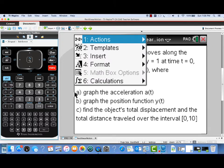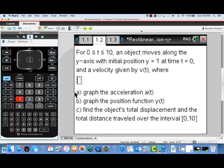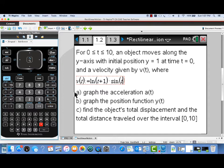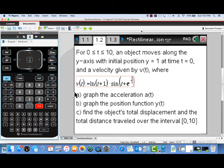Now, I've left that blank. I'm going to enter the velocity now in a math box so it will be an active definition. We'll just type in v of t, and instead of using the equals sign, I'm going to use the colon equals, which is used for making a variable or function definition. Our velocity is given by the natural log of t plus 1 times the sine of the quantity t plus e to the negative t. After I finish entering that, once we have the velocity function defined, we can answer these questions. We're asked to graph the acceleration function a of t, the position function y of t, and we're also asked to find the object's total displacement and the total distance traveled over that time interval 0 to 10.